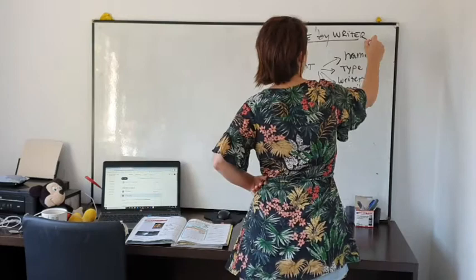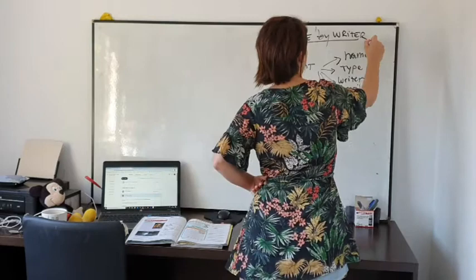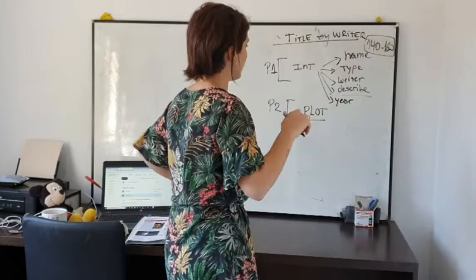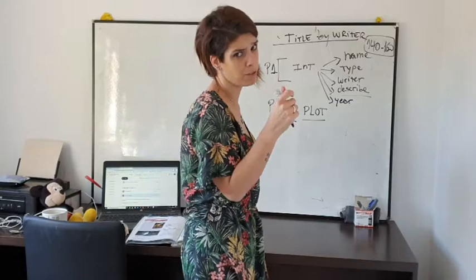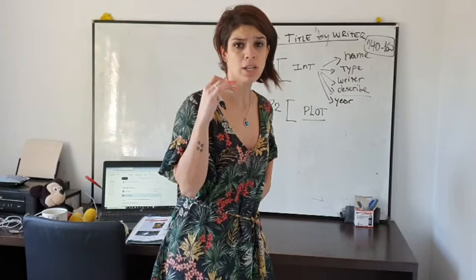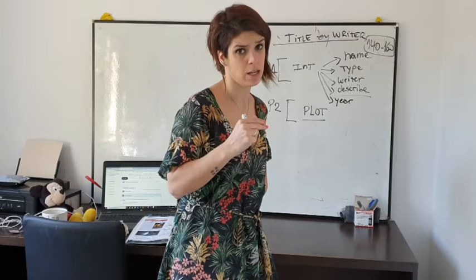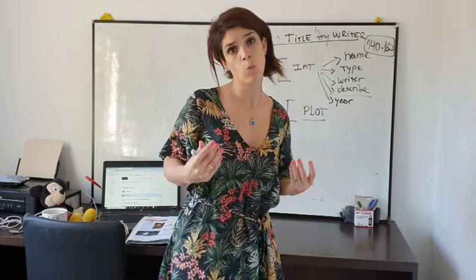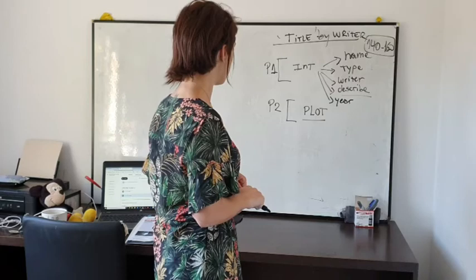We're going to write a review of about 140 to 160 words. If you divide that amount of words into four paragraphs, that means more or less 35 to 40 words per paragraph — keep that in mind. In the plot paragraph, it's really important to use a lot of adjectives. I'm going to give you a list of adjectives you can use — positive adjectives and negative adjectives — depending on the message you want to convey in your writing.